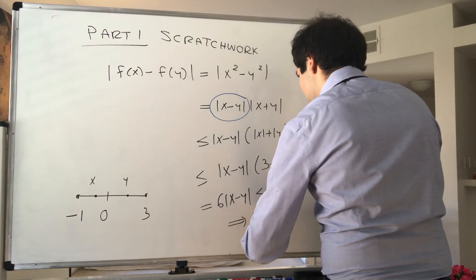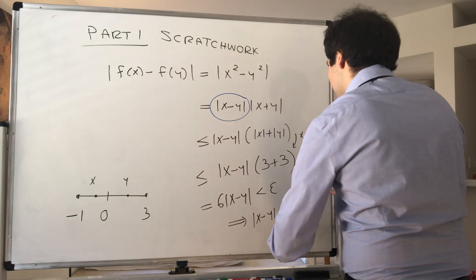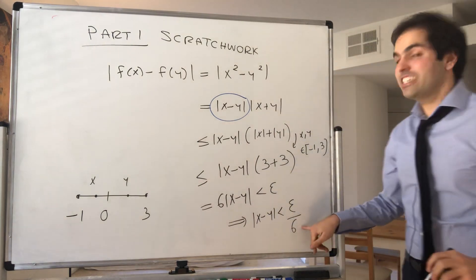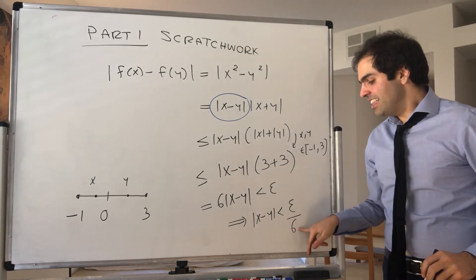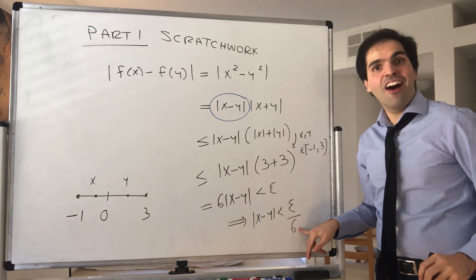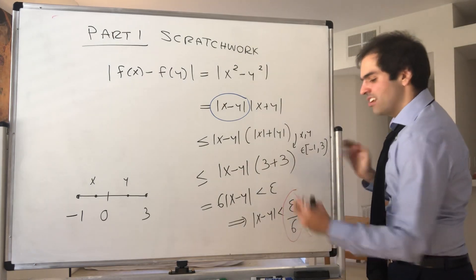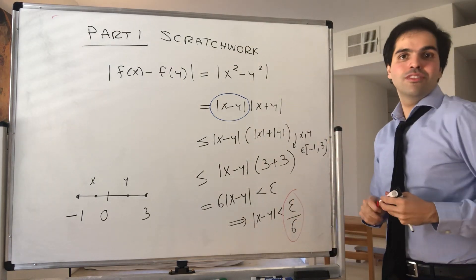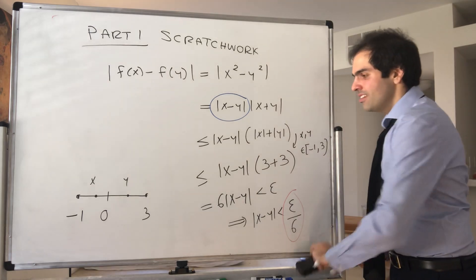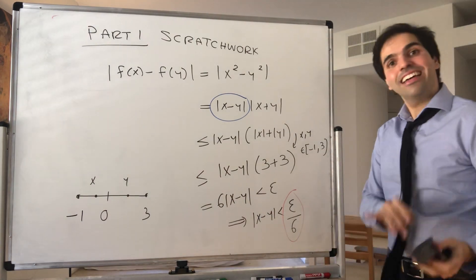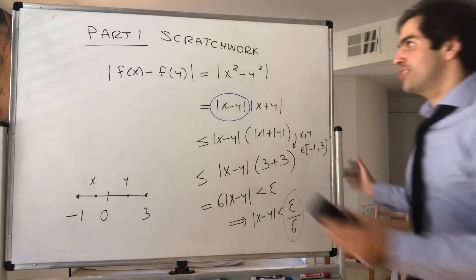which we want to set less than ε. And then we get |x - y| < ε/6, which is perfect, because this does not depend on x or y. You see this δ, which is ε/6, it just depends on ε. All right. And now let's attack. Let's do our actual proof.